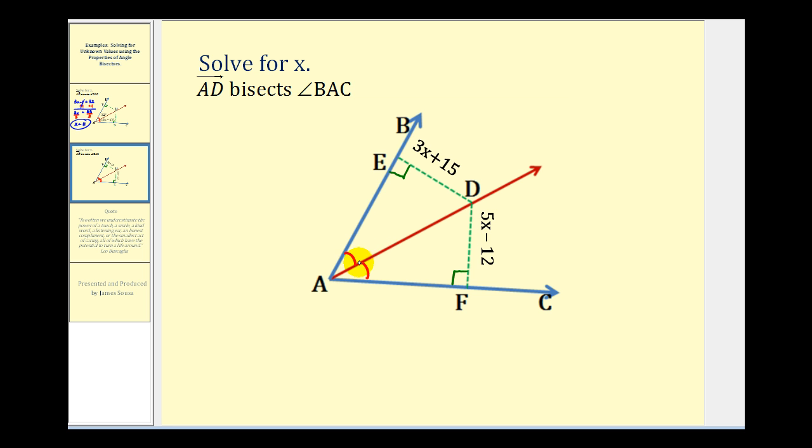But it's also true that any point on this angle bisector would be the same distance from either side of the original angle. In other words, these two green segments are congruent. Therefore we can conclude that three x plus 15 must equal five x minus 12, allowing us to determine the value of x.